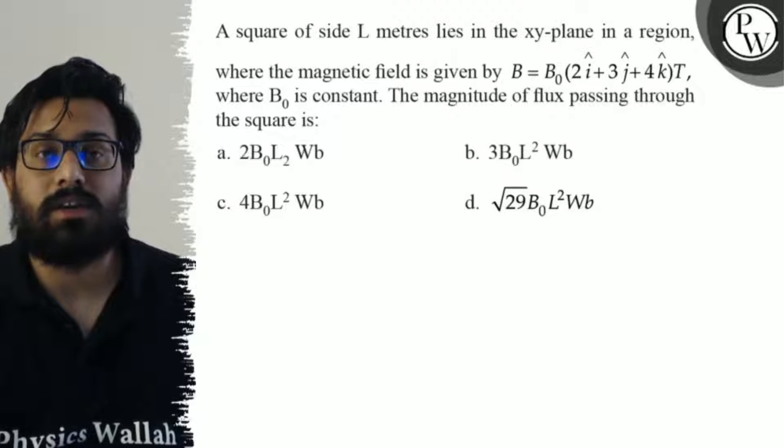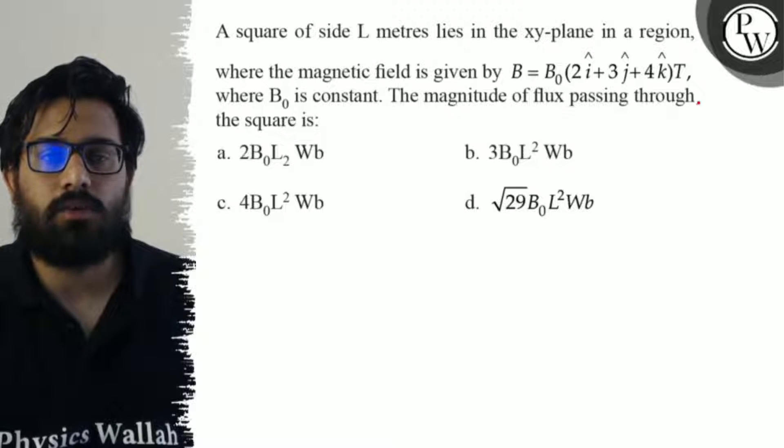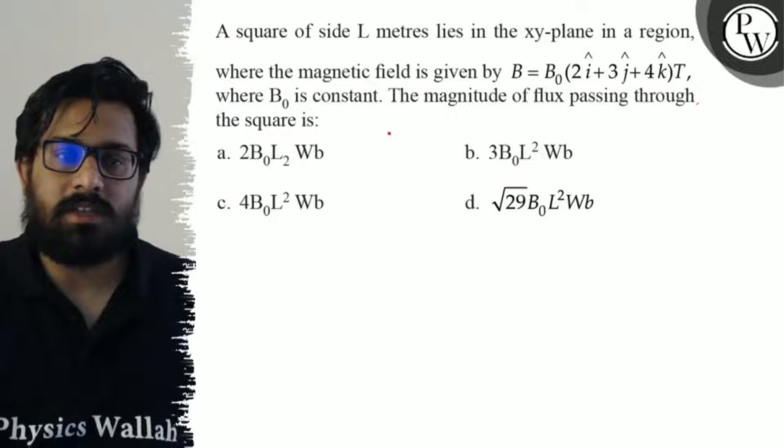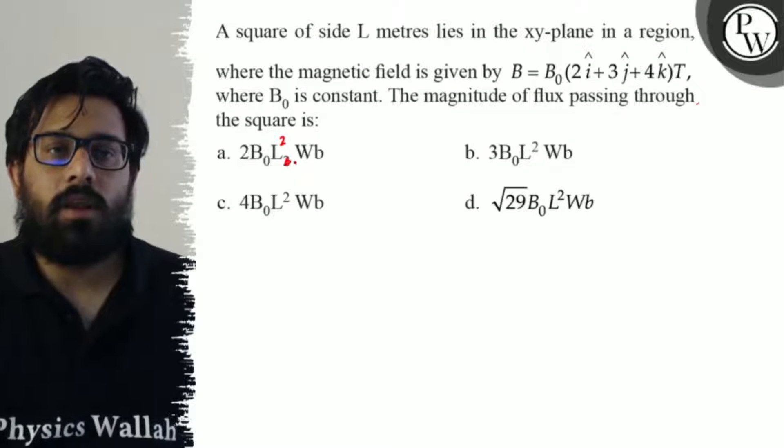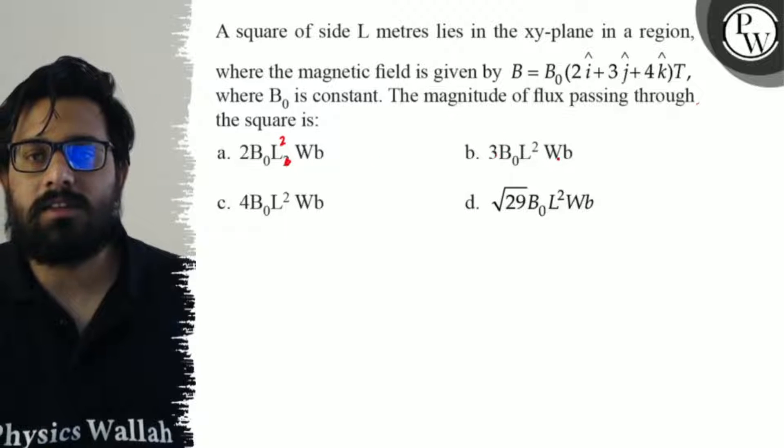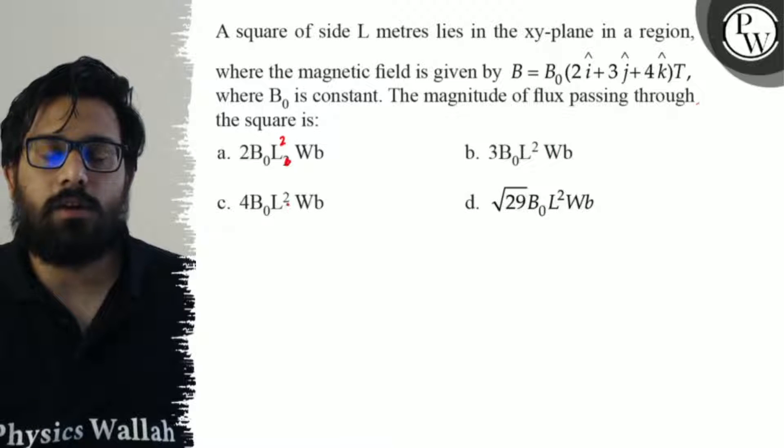where B₀ is a constant. The magnitude of the flux passing through the square is: your first option is 2B₀L² Weber, your second option is 3B₀L² Weber.